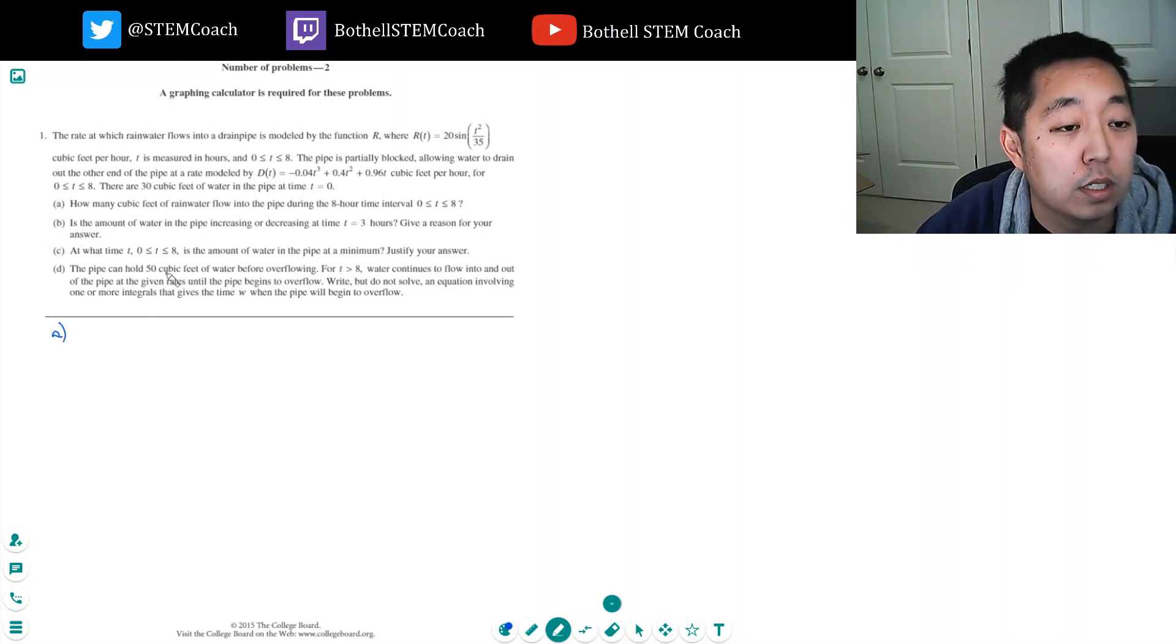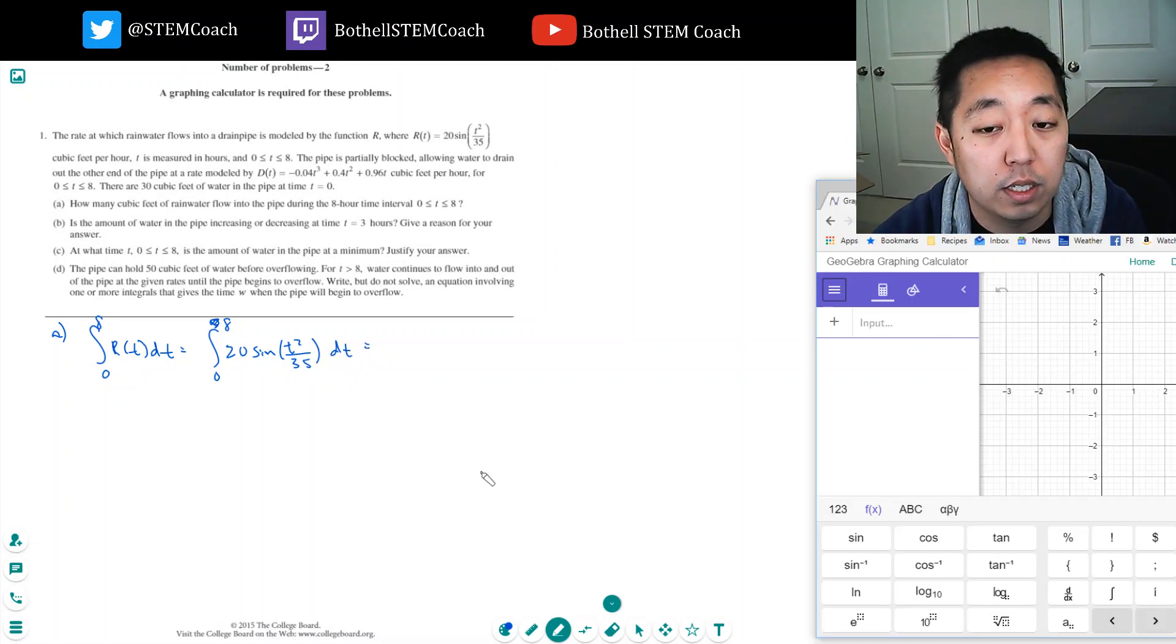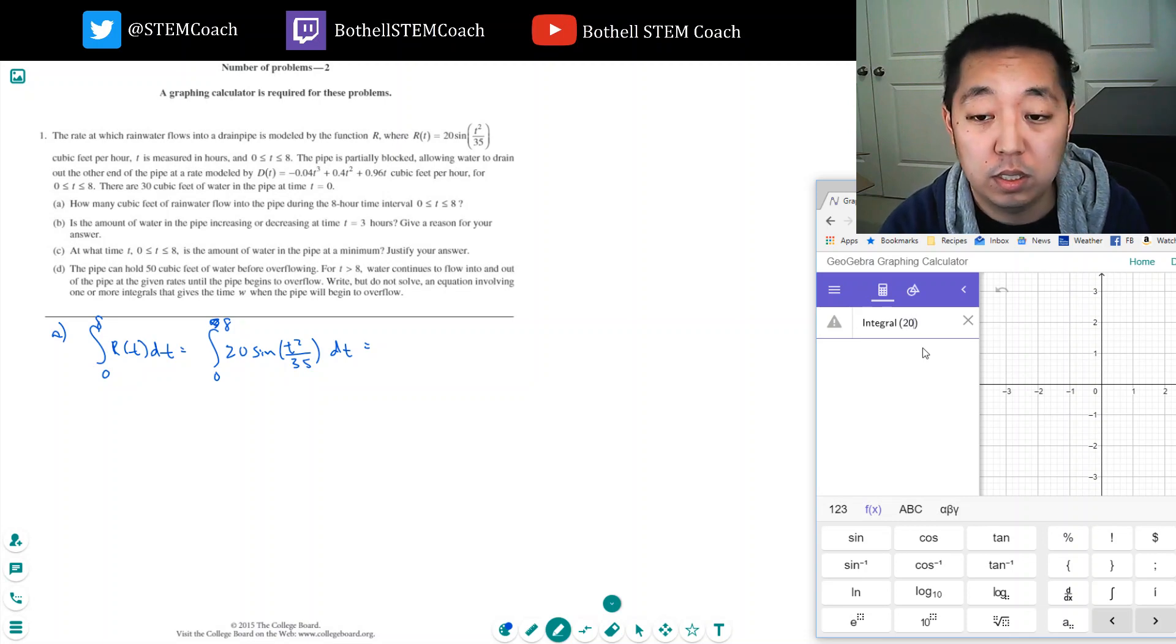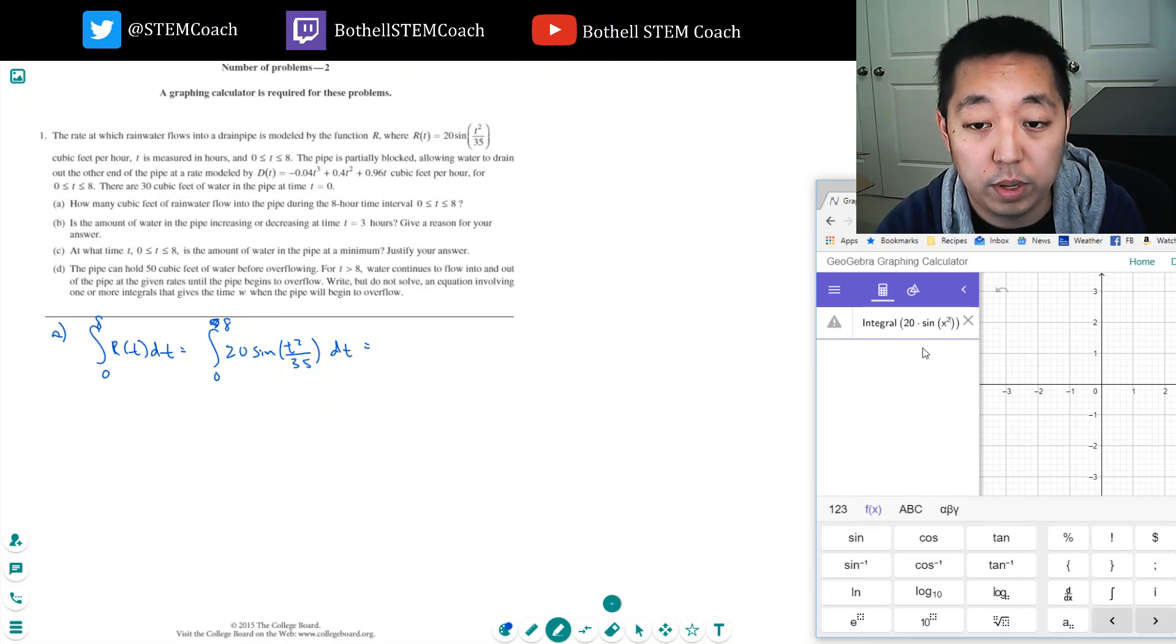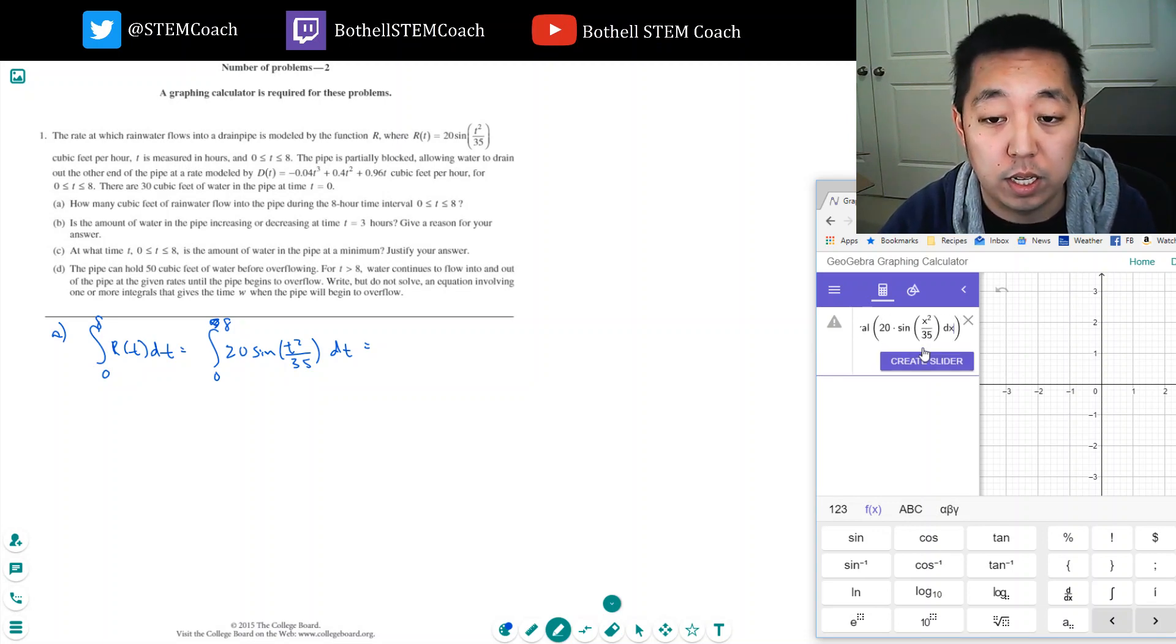For part A, flowing in is this one during the eight hour time interval. So we got to do the integral of the rate from zero to eight of R of T, DT, zero to eight. You probably don't have to write this step out like this, but I write it out just so I'm very clear as to what I'm integrating over. And let's take a look. So I'm going to do the integral of 20 times sine of X squared divided by 35, DX.